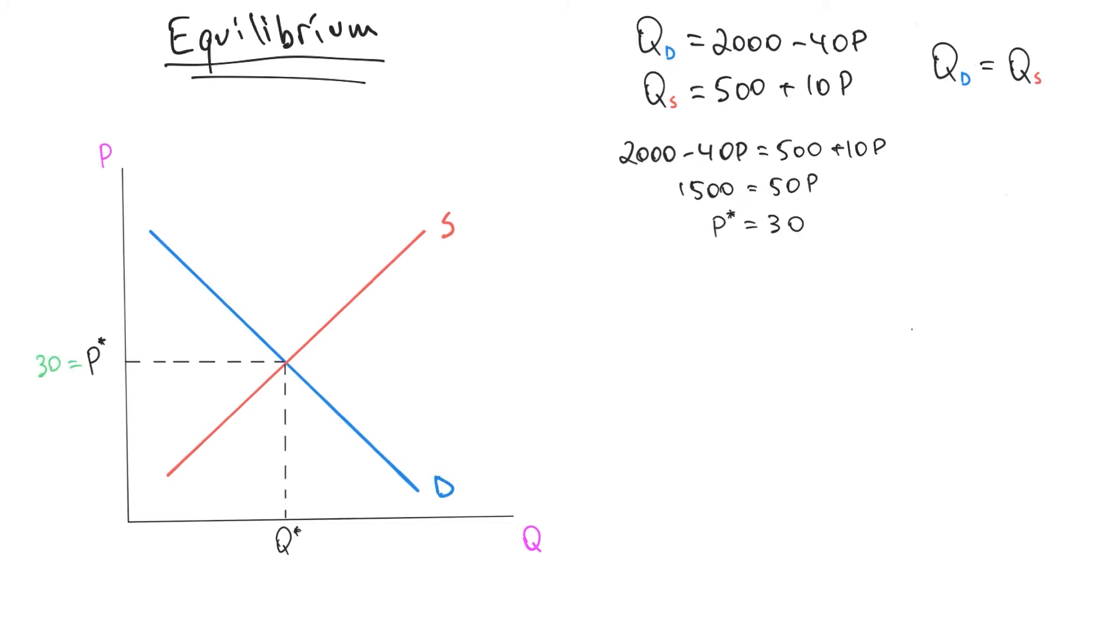And now to get the optimal quantity, we just have to plug it into one of the equations. Let's plug it into this one. So we have q equals 500 plus 10 times 30 equals 800.